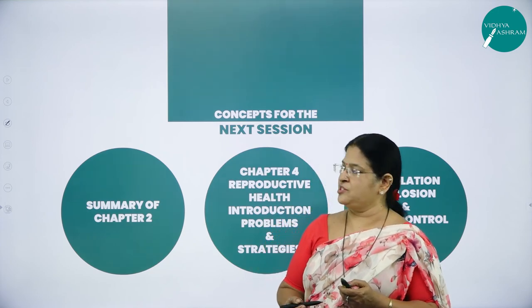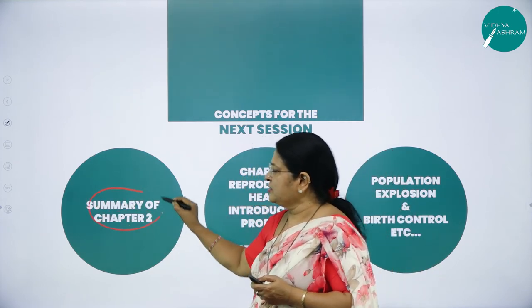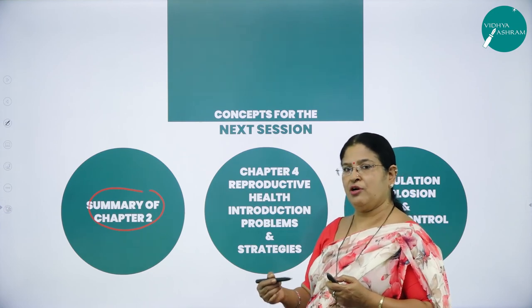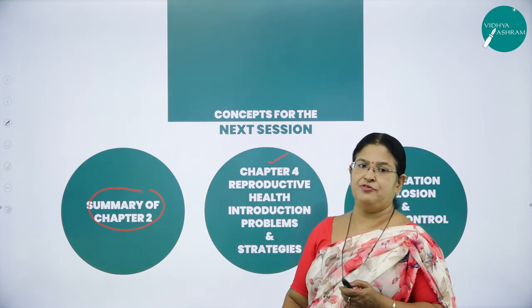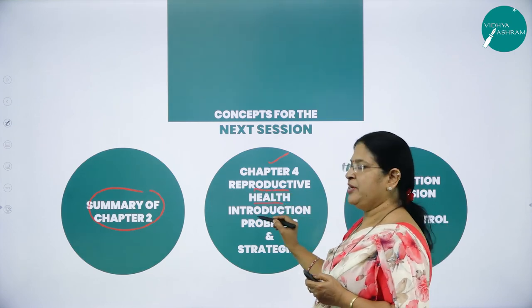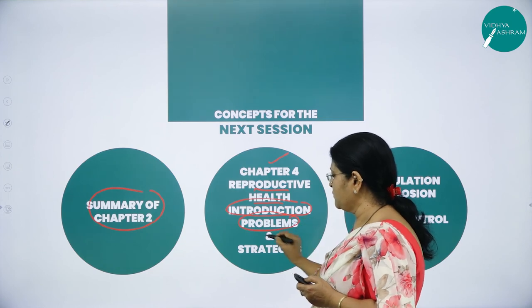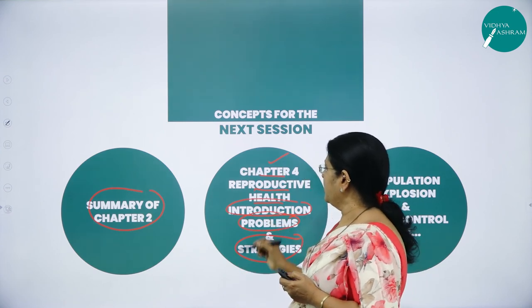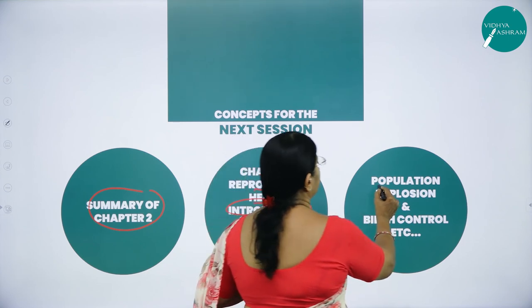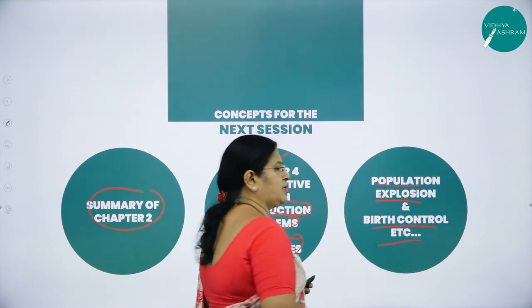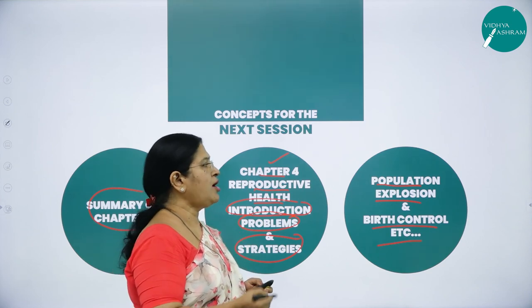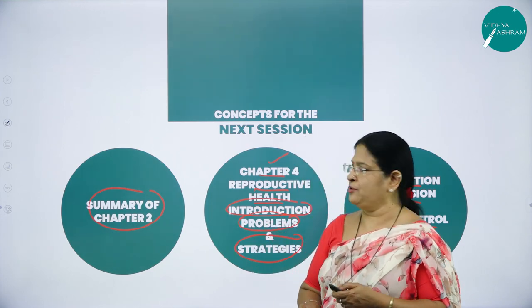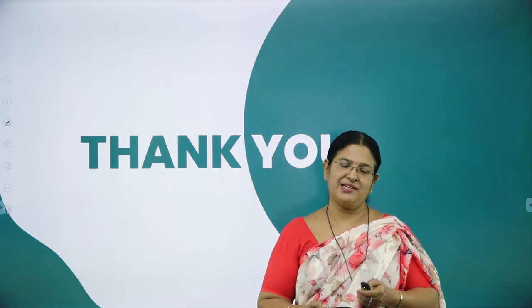In the coming session I will summarize chapter 2, Sexual Reproduction in Flowering Plants, so you remember all the points. Then we will move on to the very important chapter 4 called Reproductive Health, starting with an introduction, problems and strategies, population explosion, birth control, and the measures taken to control birth. Till then, meet you in the next session. Thank you.